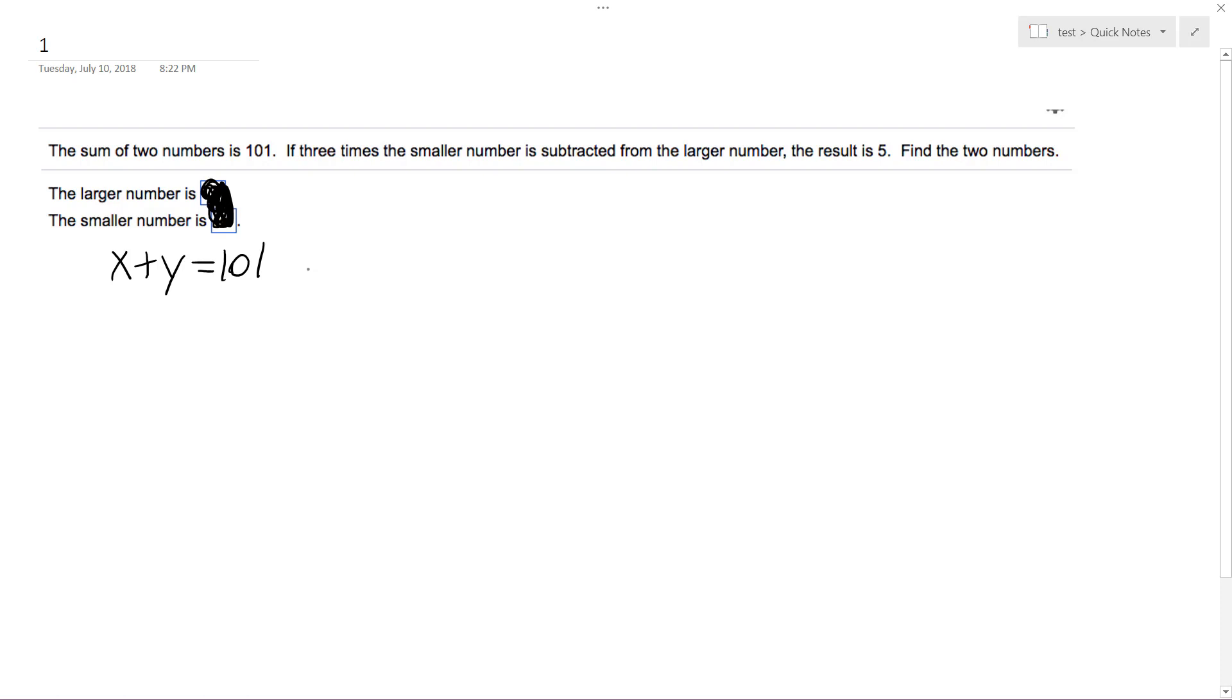So three times the smaller number subtracted from the larger number gives us y - 3x = 5. Okay, so I'll just do substitution - you can do elimination or substitution.